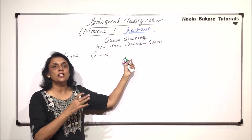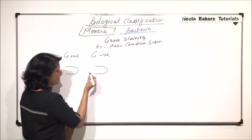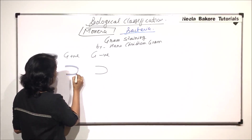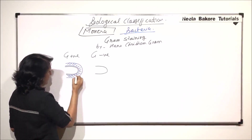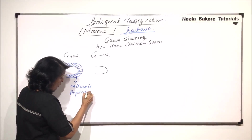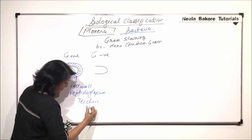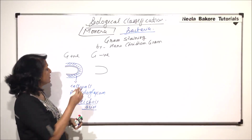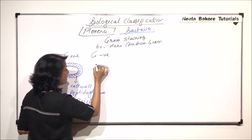Let's understand what exactly makes the difference. If this is a bacterium with a plasma membrane, then in Gram positive bacteria, outside this membrane there is a cell wall. This cell wall is made up of peptidoglycan, which is rich in teichoic acid. This is very important. This peptidoglycan is arranged in multiple layers, making it comparatively thicker.